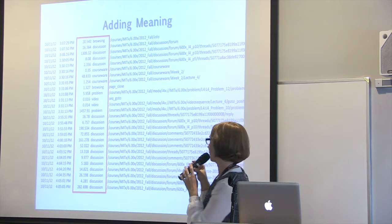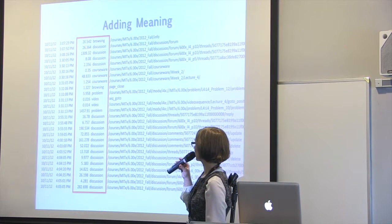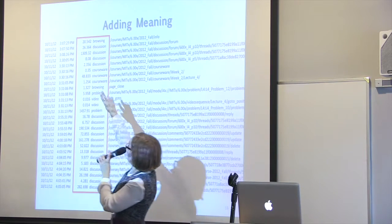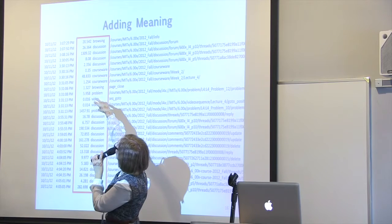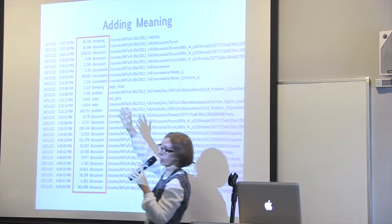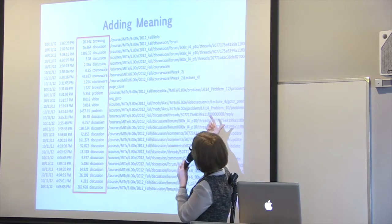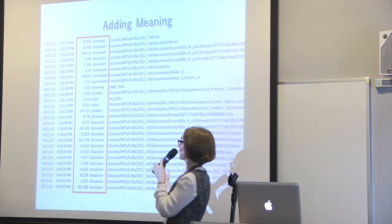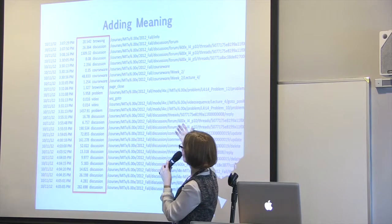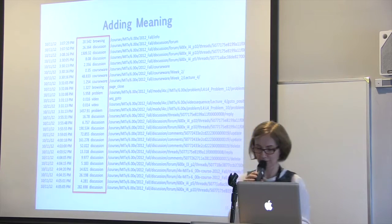One common measure in learning data research is time spent on a task, calculated simply by taking the difference between two consecutive steps. The other step was making the URLs meaningful — figuring out if a URL involves a problem or a discussion. So I created higher-level categories and dealt with them automatically, then moved to the next step of visualizing the data, because it's better to look at graphs than numbers in a spreadsheet.